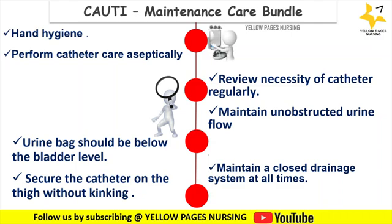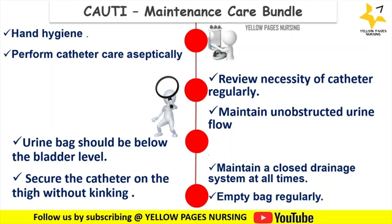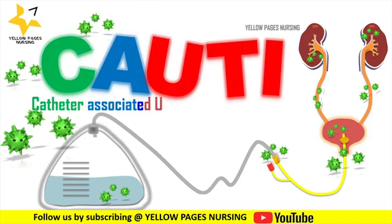Maintain a closed drainage system at all times, because a closed system prevents contamination and possible pathogens from entering the bladder. Empty the urinary drainage bag regularly and keep the bag under three-quarters full at all times. Use individual containers for each patient to collect urine, and do not let the drainage spigot touch the container or floor. Each institution has separate insertion and maintenance care bundle checklists — follow according to your institutional policies.